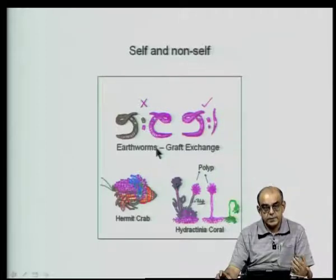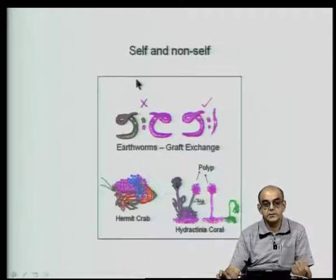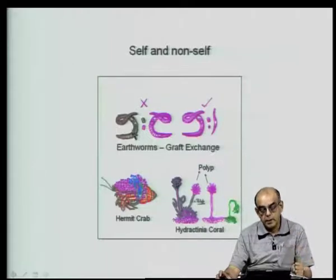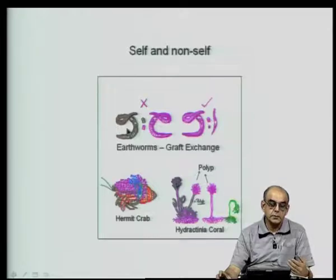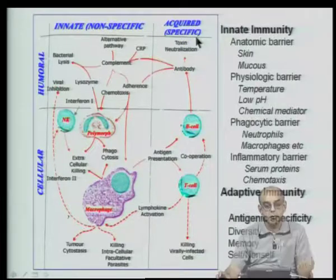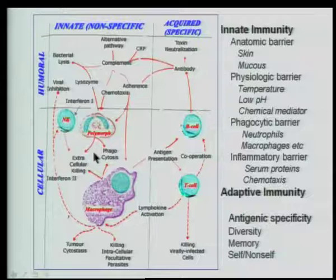These reactions abound in the animal kingdom. The distinction between self and non-self actually arose very early on and is due to the evolution of protein molecules or receptors expressed on the surface of cells. There are two parts to the immune system: the innate or non-specific immunity, and the acquired or specific immunity. Innate immunity is that which is present from birth.